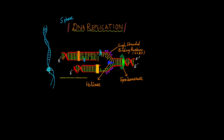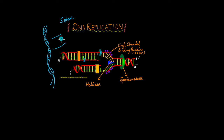This is how DNA looks. As proved by Meselson and Stahl's experiment, the two strands are separated into individual strands and each strand serves as a template for the synthesis of the new strand. That is what happens during the process of DNA replication.